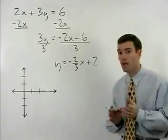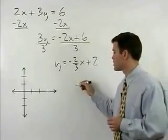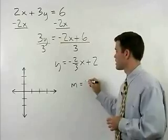Its slope or m, remember, is the coefficient of the x term, which in this case is negative 2 thirds.